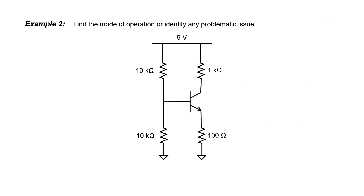Let's look at another example. Again, let's assume that the base current is negligible, and I can immediately see that the base ought to be halfway between the power supply and ground. We'll assume that the base emitter junction voltage drop is a forward biased P-N junction — that is 0.7 volts. That gives me an emitter voltage of about 3.8 volts. Current's going to flow downwards through the 100 ohm resistor, so I can conclude that this transistor is not in the cutoff mode.